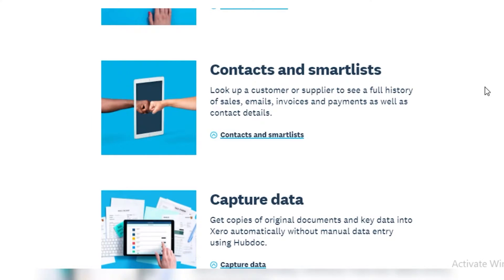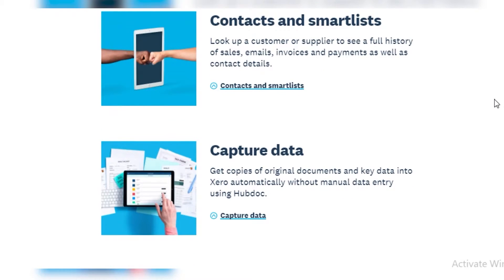Moving on, we have contacts and smart lists. You can look up a customer or a supplier to see the full history you have with them — your sales, purchases, emails, payments, invoices, and all other contact details. This is really helpful if you have a long-term client or supplier, as it helps you keep track of all the communication that has taken place.